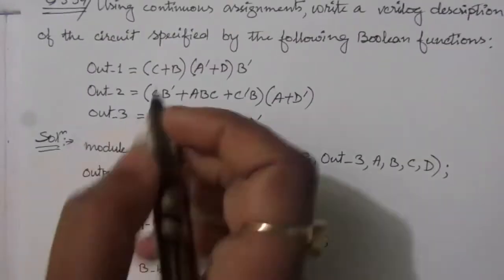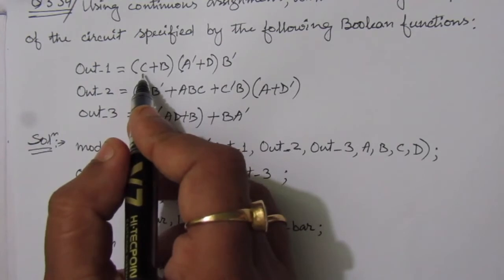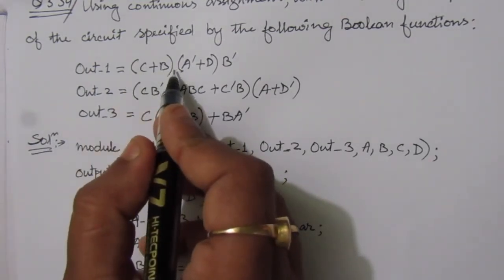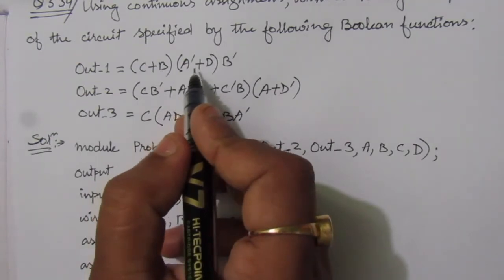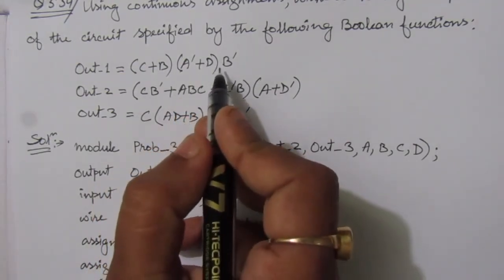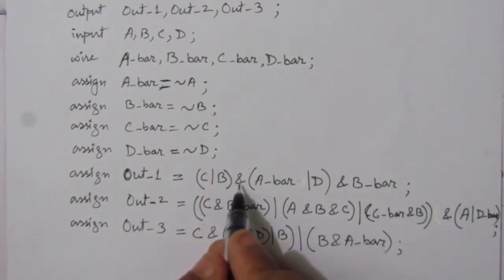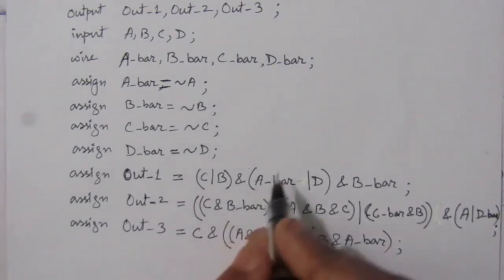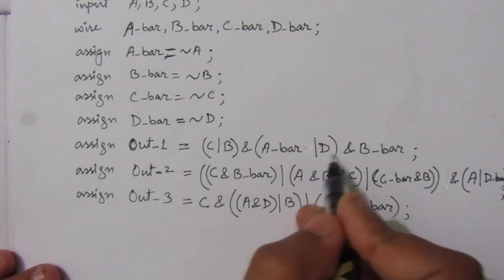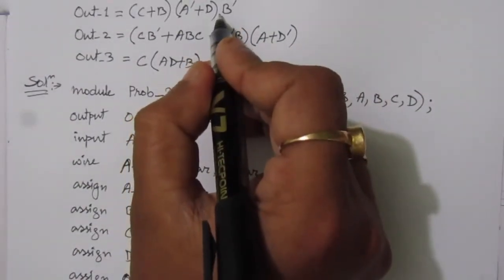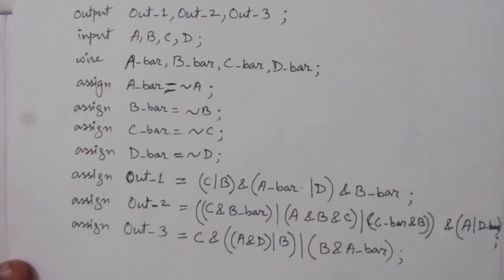In the first equation, we have C plus B — that means it is an OR operation, so we write C | B. Then we multiply it — that means we write AND. Within bracket, we have A_bar | D, bracket close, then AND B_bar. So the assign out_1 expression is: (C | B) & (A_bar | D) & B_bar.